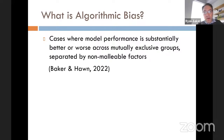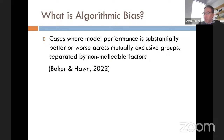Concretely, you can see this in educational algorithms in cases where model performance — how good they are at identifying which kids are at risk or which intervention to give — is substantially better or worse across mutually exclusive groups separated by things they can't change, such as race, ethnicity, or gender.